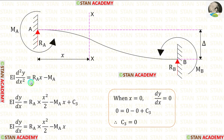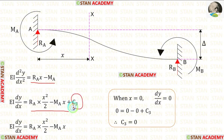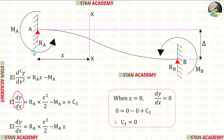When we integrate these two terms, we will get these. C3 is the constant. We know that dy/dx is the slope. In point A, there is a fixed support.